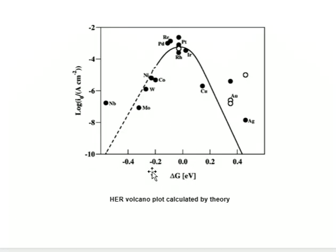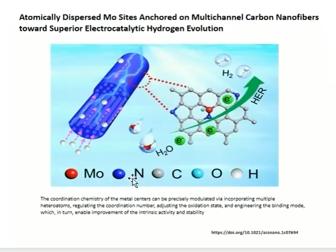This is the volcano plot for hydrogen evolution catalysts, which shows the relationship between the hydrogen evolution activity of the catalyst and the free energy of hydrogen binding. This relates to an article about atomically dispersed Mo sites.